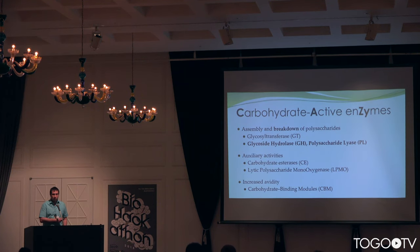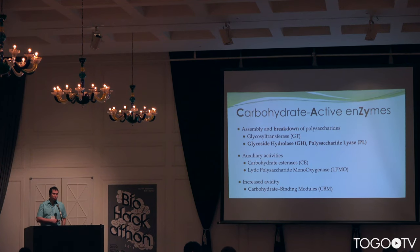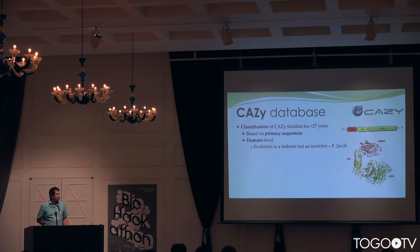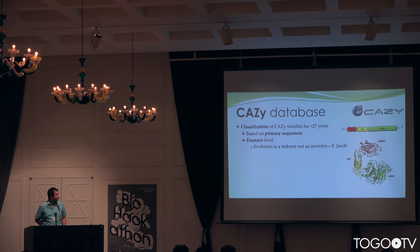For the assembly and, more interestingly, the deconstruction of these carbohydrates, we need enzymes that have to be very specific — and this is the most specific class of enzymes there is in the world. These enzymes, for example the glycosyltransferases and all these classes of enzymes, are classified in the CAZy database since basically 27 years. This is a classification into subfamilies and families that is primarily based on sequence level and that involves protein domains, since evolution is not an inventor but a tinkerer.